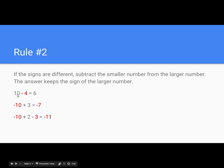Here's an example. 10 minus 4 equals 6. The 10 is a positive number, the 4 a negative number. Because these are different signs, subtract. 10 minus 4 is 6. The answer keeps the sign, positive, of the larger number, which was 10.